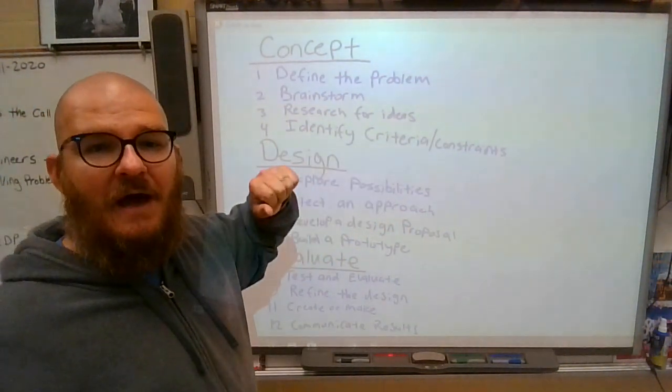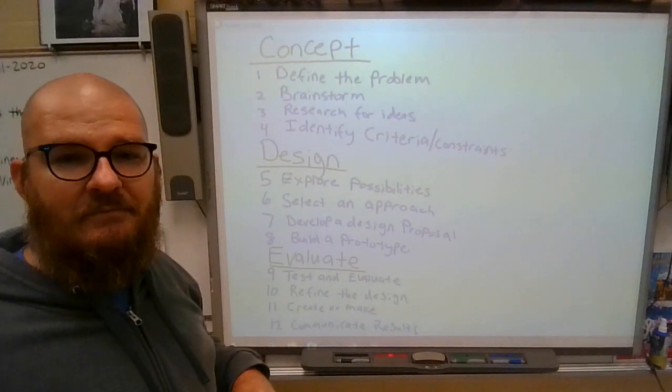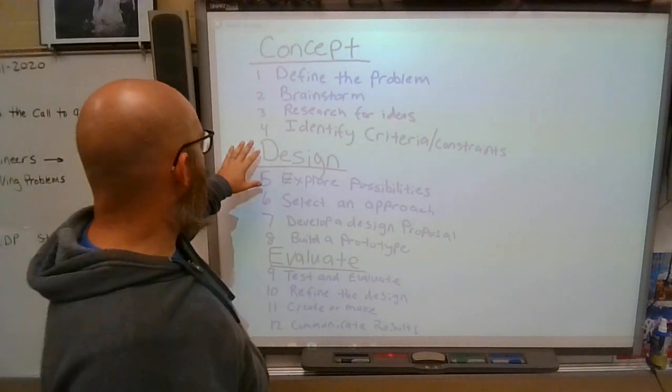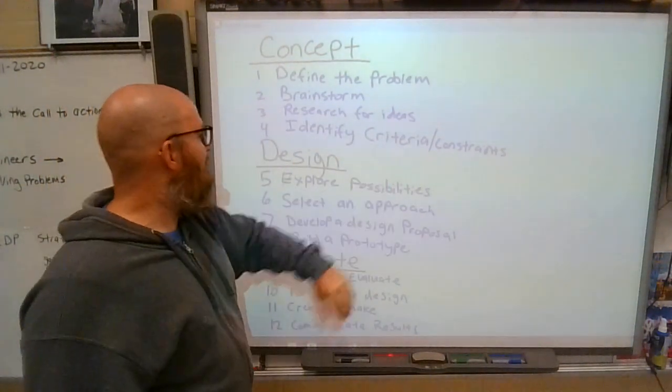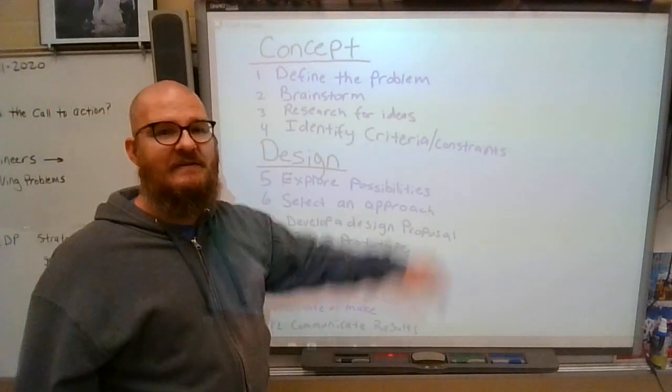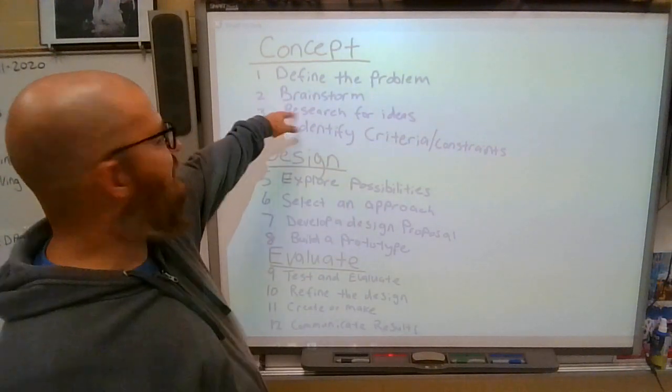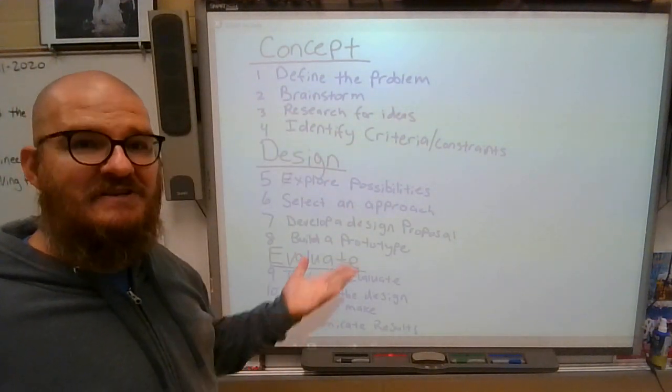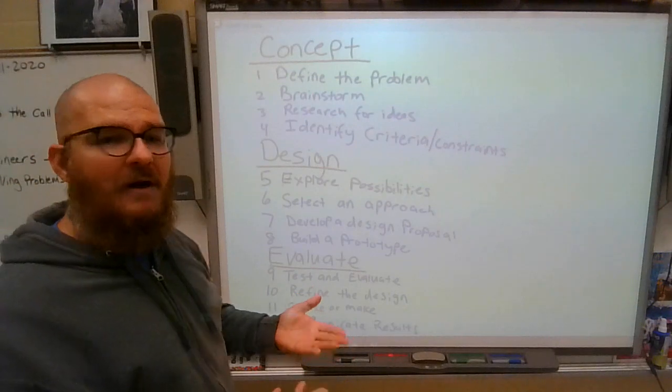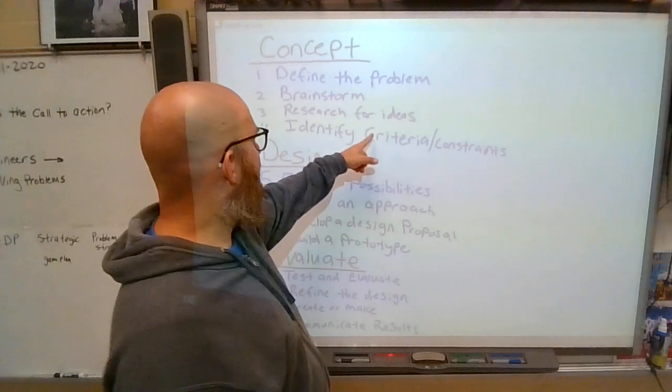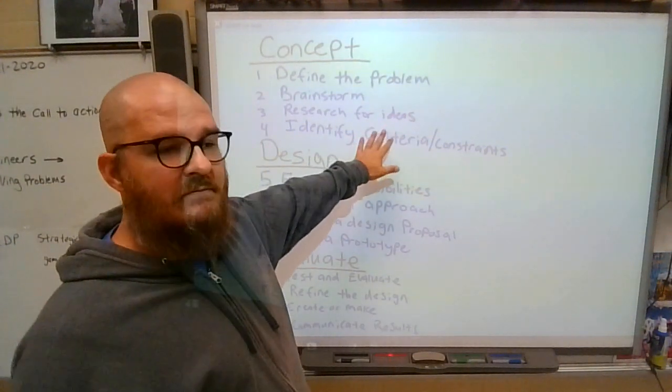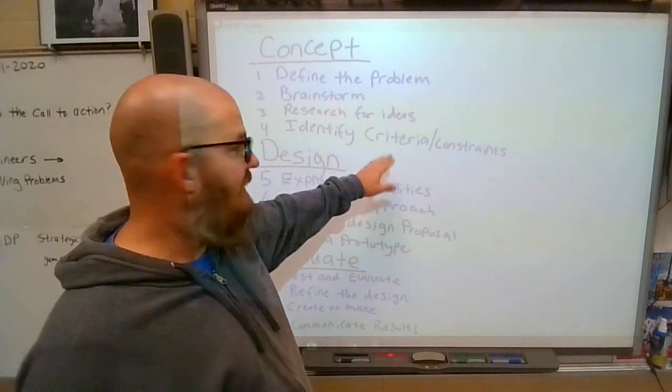The criteria might be I want a hamburger, so that would make Chick-fil-A out. Exploring possibilities takes into account your criteria and constraints. When you research for ideas, Chick-fil-A and Captain D's might have come up. I don't want fish is a constraint, or it could be a criteria. We'll get into that later.